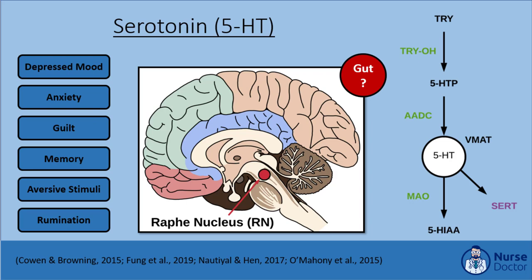There is interesting evidence emerging that the gut is actually a significant site of serotonin synthesis and metabolism. One study revealed that roughly 90% of the body's serotonin is synthesized in the gut. Gut microbiota have been found to influence tryptophan metabolism and ultimately the serotonergic system. These findings are further described by the gut-brain microbiome hypothesis of depression.